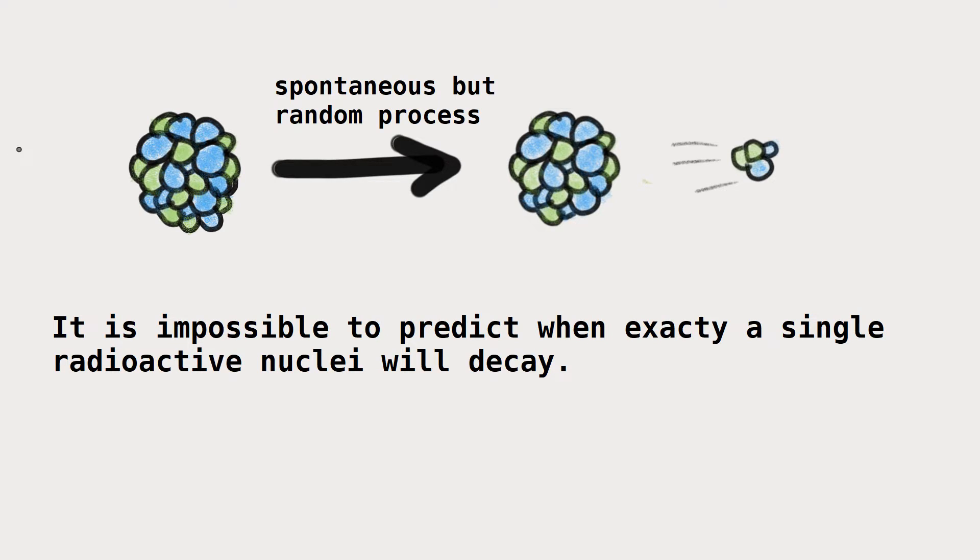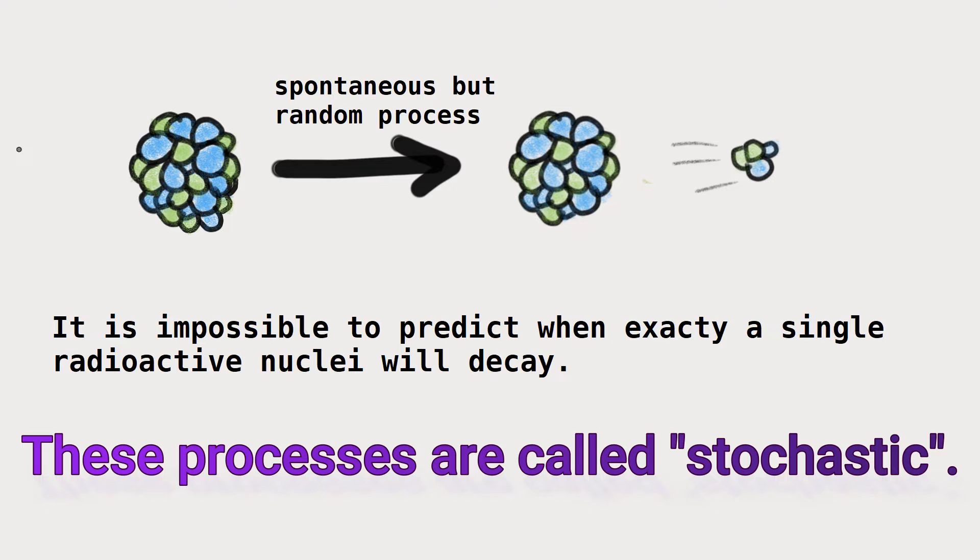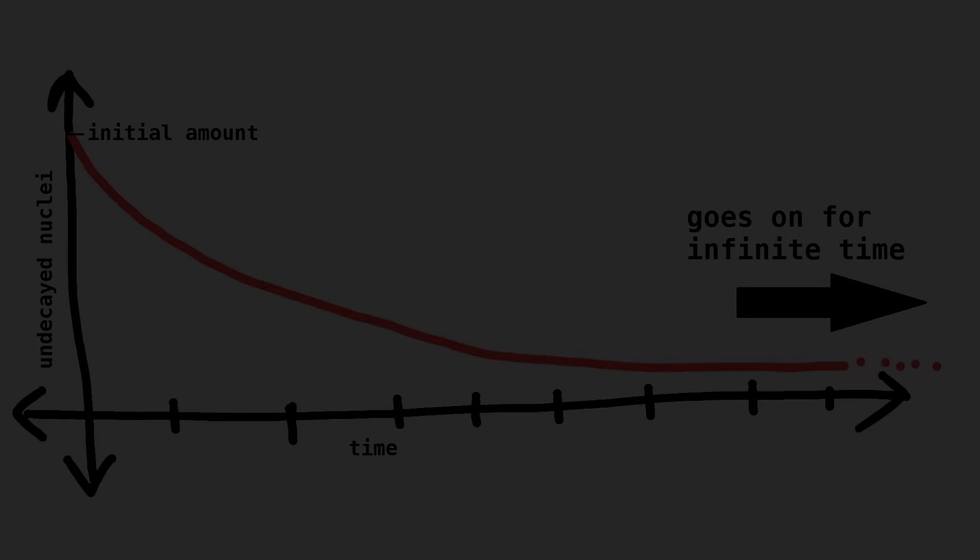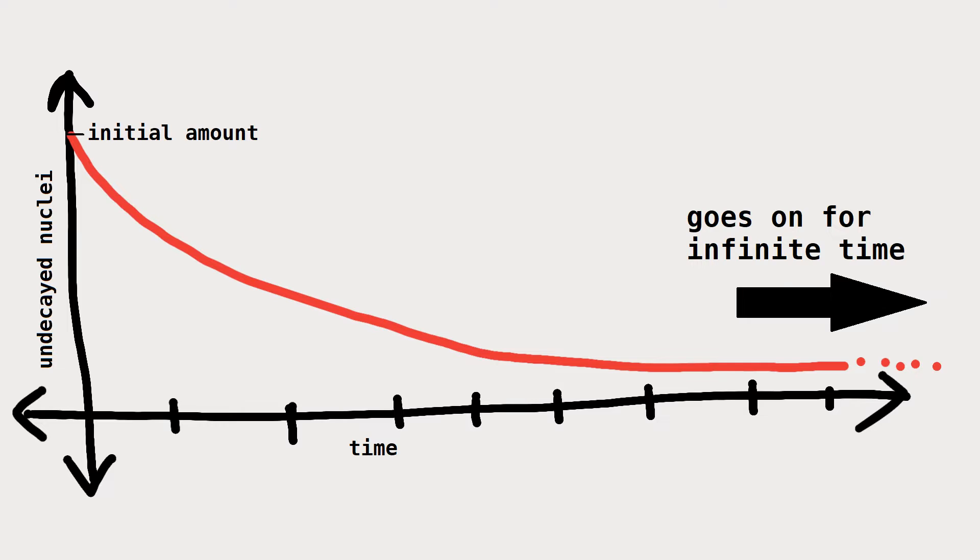Processes like this, which are fundamentally random and can only be analyzed statistically, are called stochastic processes. The law of radioactive decay shows that the rate of decay of a large number of nuclei does decrease with time, but it still goes on forever. So, while some nuclei might decay at the very instant you start observing them, some others in the same sample might decay after a million years when you are long gone.